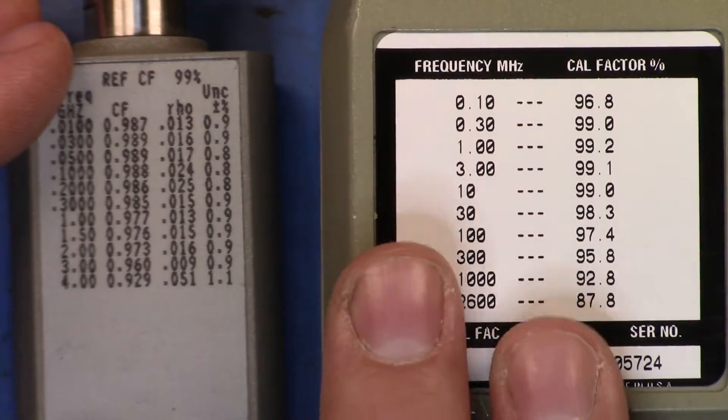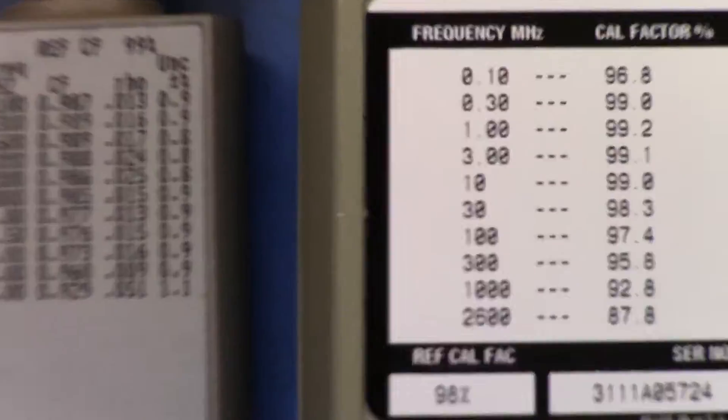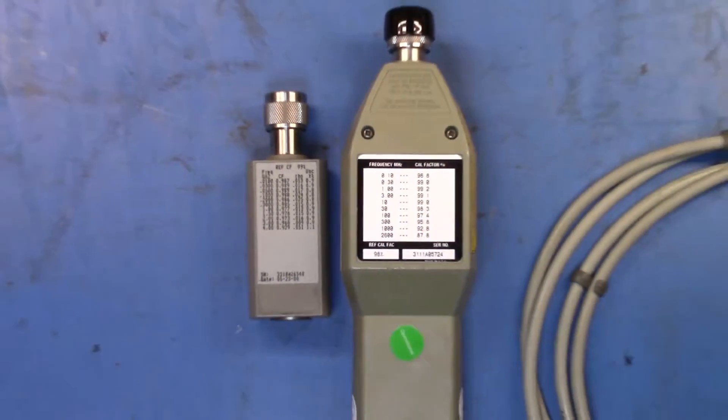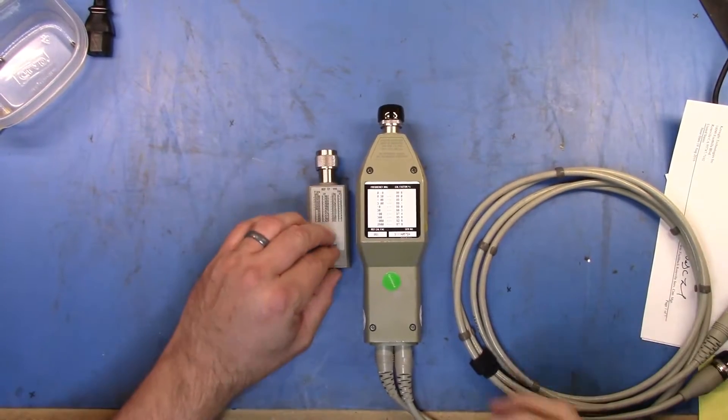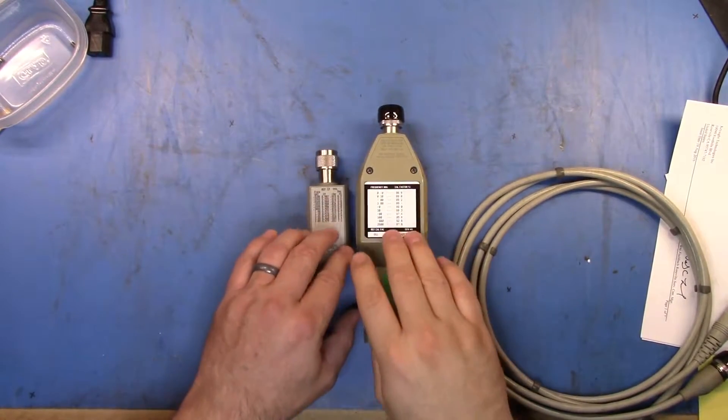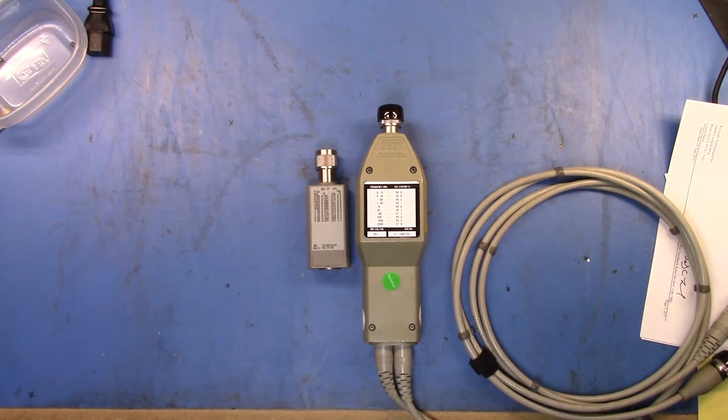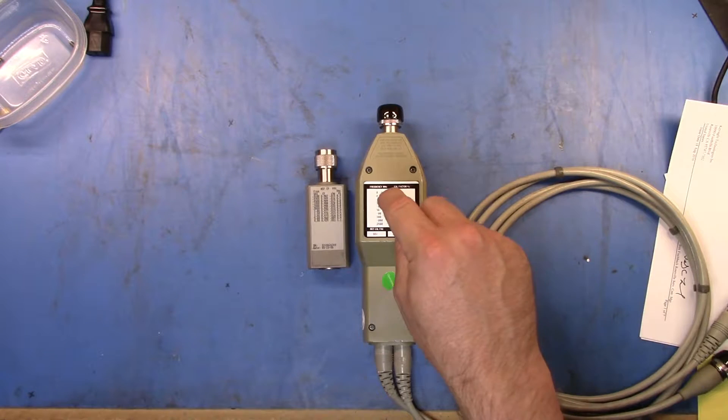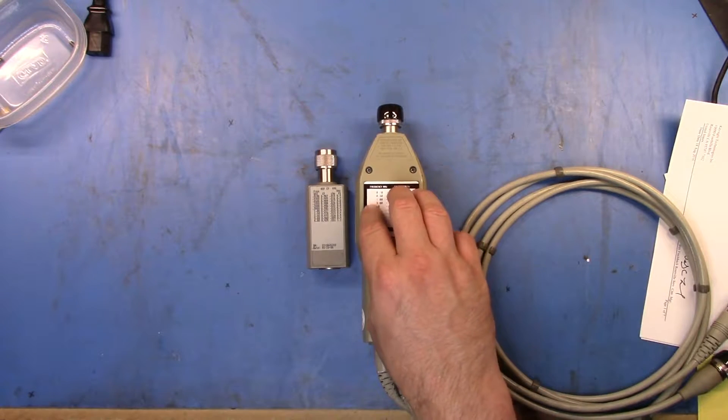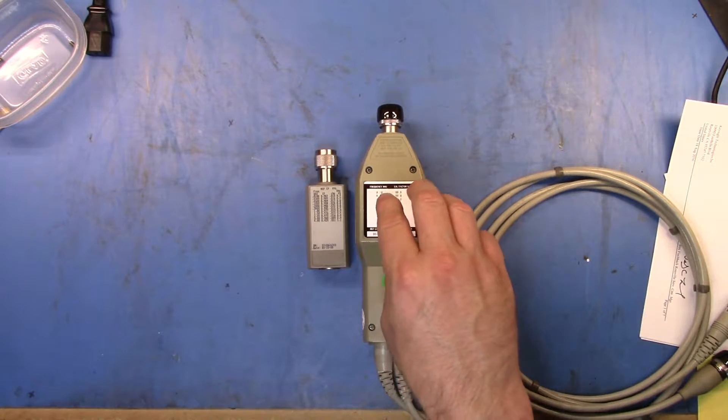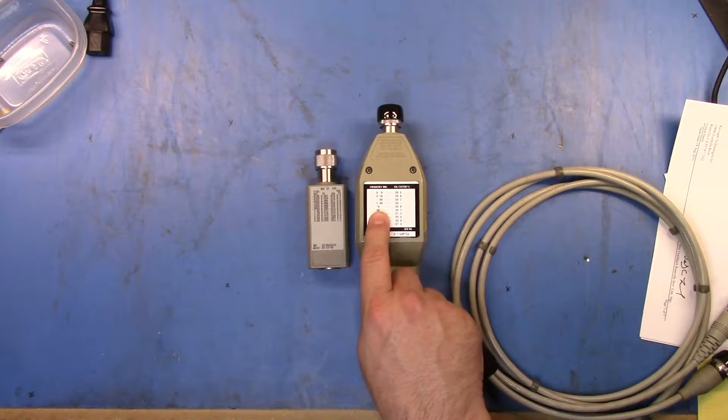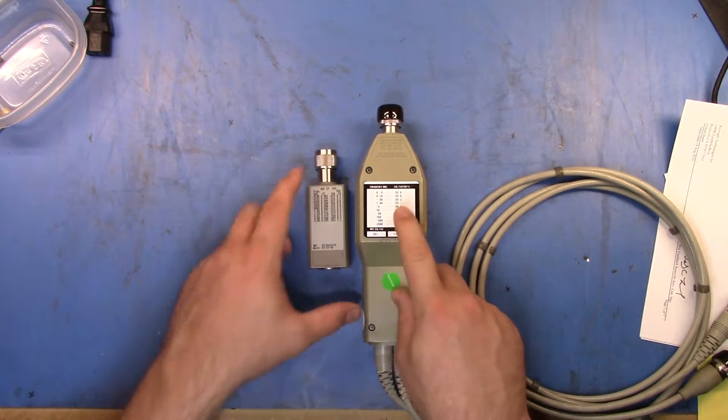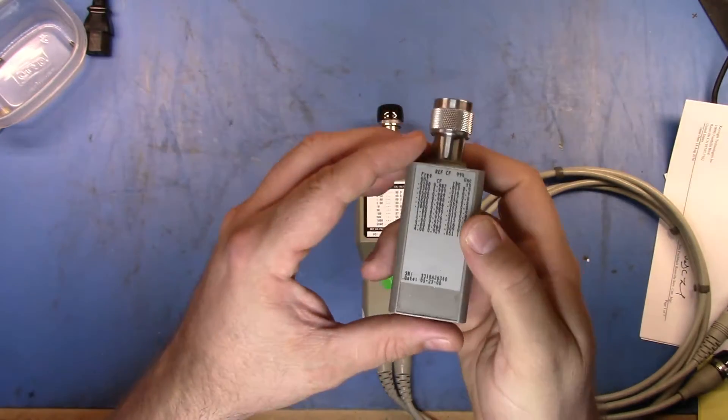For some reason what happens when you tend to buy both of these types of devices secondhand is that you tend to see that they've ripped off the calibration information. I was asking why this was the case and no one really seems to know exactly why people do it. The prevailing theory though is that by taking off the calibration data here, they can claim that it works and because you now don't know...